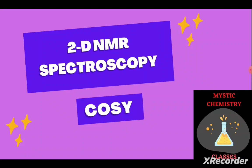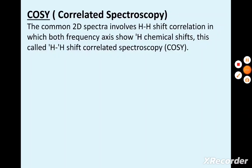In this particular video we will study about another 2D NMR spectroscopy technique which is known as COSY. The COSY technique is also known as correlated spectroscopy. The common 2D spectra involves hydrogen-hydrogen shift correlation, in which both frequency axes show hydrogen chemical shifts.